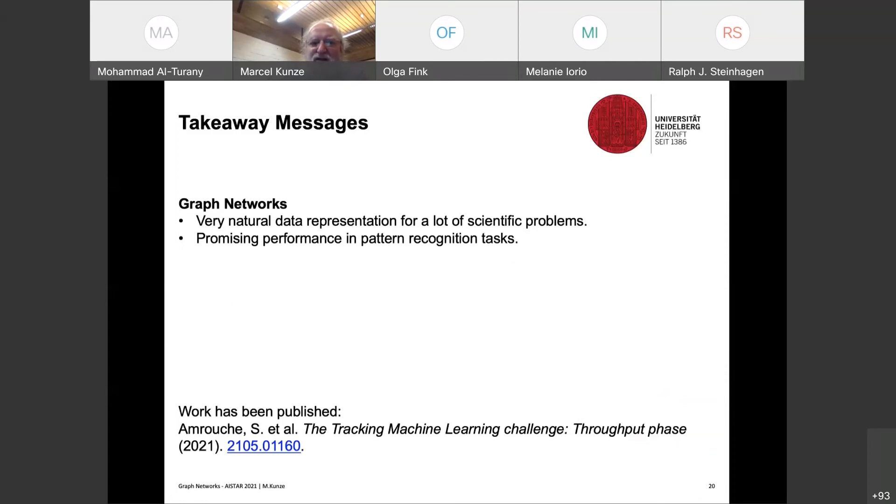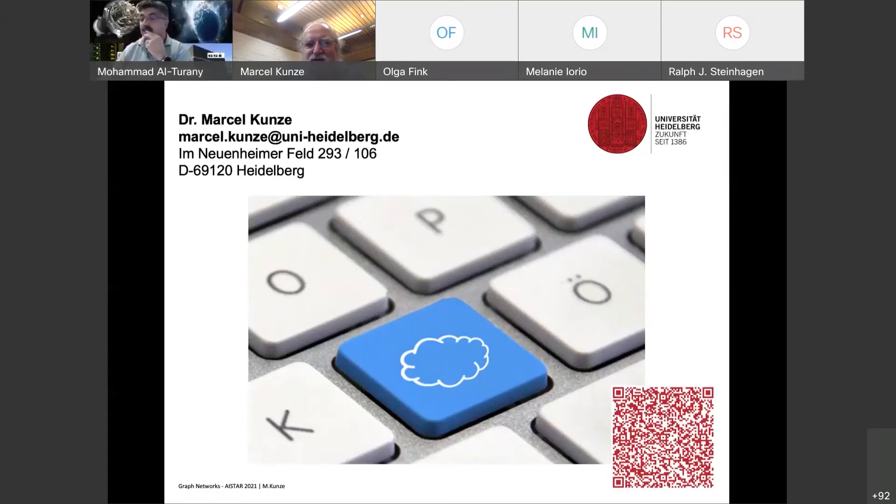So summarizing the takeaway message is we have a very natural data representation for a lot of scientific problems with graph networks. And we have also promising performance in pattern recognition tasks, as was shown in the tracking machine learning challenge. And this work also has been already published. If you look here, the throughput phase paper was published this year. And you can find it at this DOI. So here I am at the end of the talk. And I hope that you got a good impression of the usefulness of graph networks. Thank you very much.